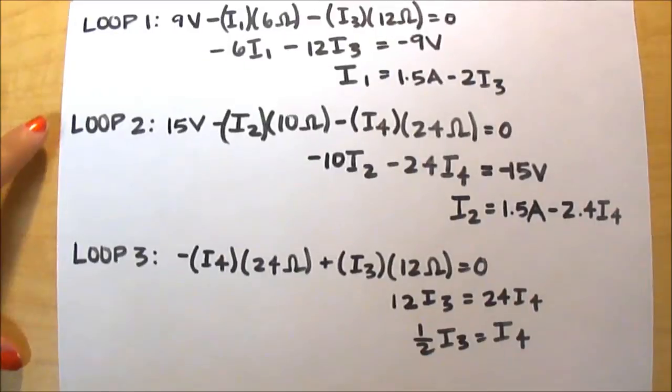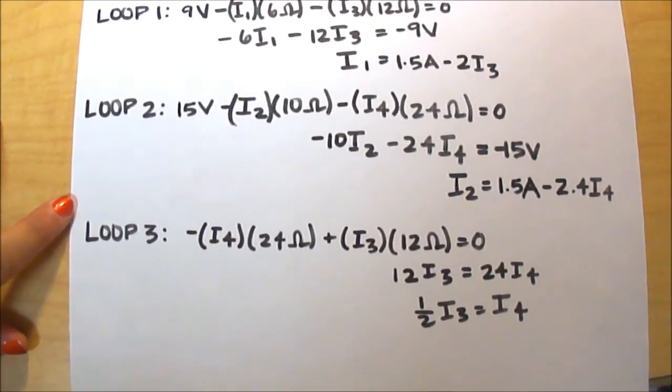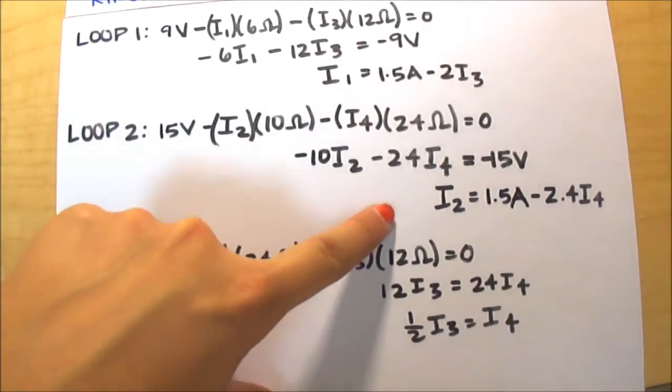As you can see here, if you've solved for loop 2 and loop 3 properly and simplified, you should come down to these two equations down here.